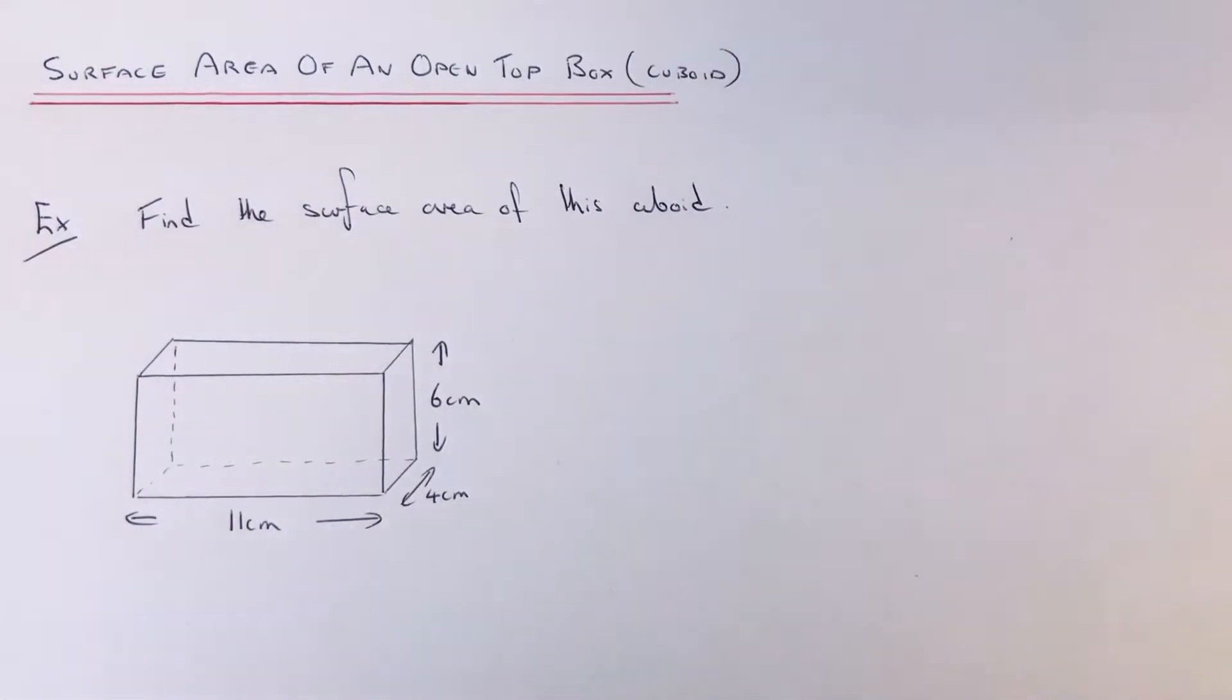Hi guys, welcome back. This is Maths 3000. Today I'm going to show you how to work out the surface area of an open top box or cuboid. So first of all, surface area is the area of all the faces added together on a 3D shape.